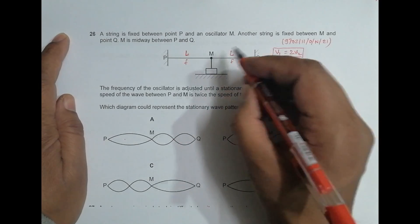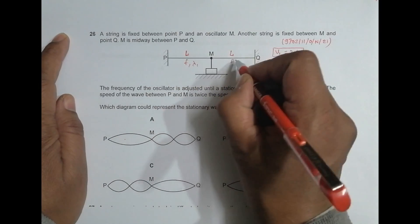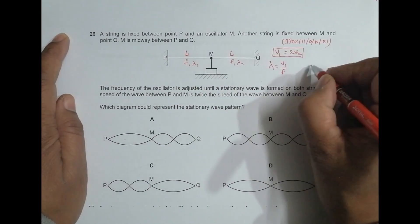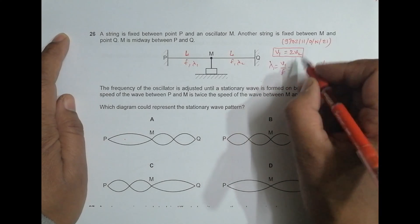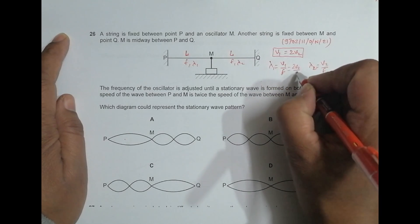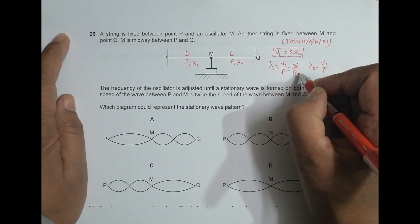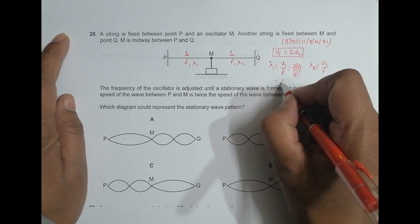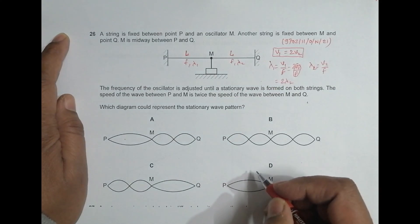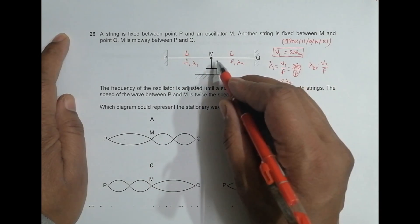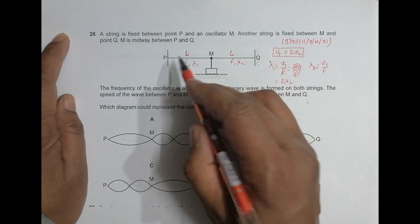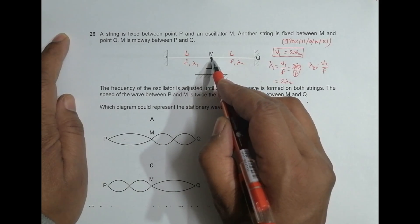And if lambda two will be here, then lambda two should be equal to V2 by F. And we know that V1 equals 2V2, so it is 2V2 by F. If I just calculate it, it becomes 2 times lambda two. So that means the wavelength here will be twice the wavelength here.